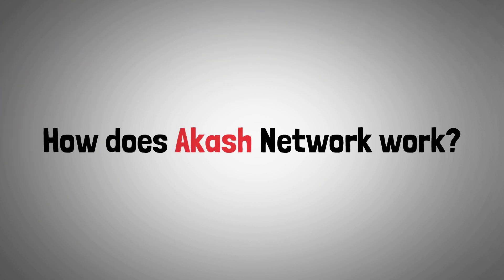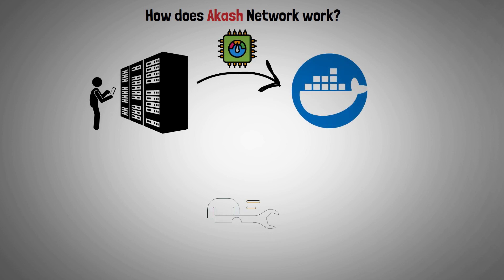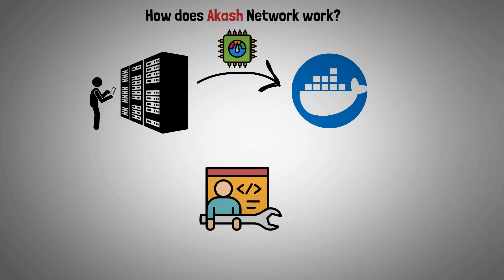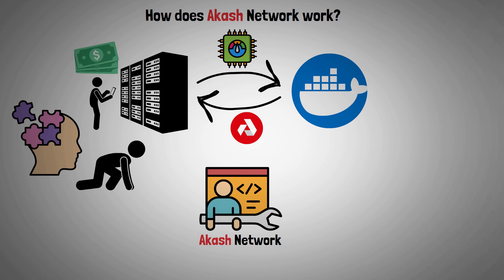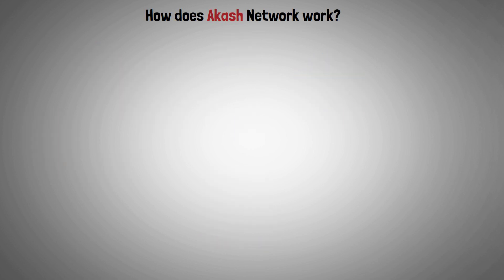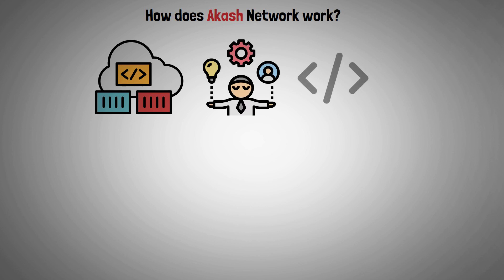But how exactly does Akash Network work? Data centers can rent their computational resources to host Docker containers, thanks to software provided by Akash Network. Data center providers get a passive income stream with native AKT token because most of them have excess capacity and underutilized server resources. Additionally, Akash containers use the newly made resources to host their applications.